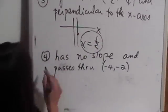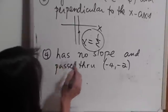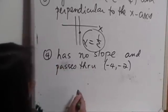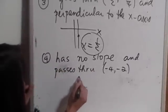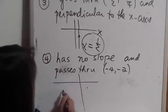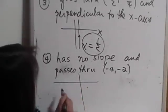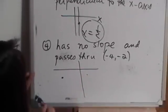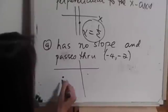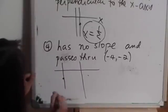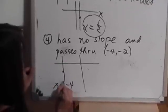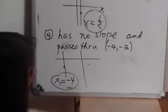Finally, I have a line that has no slope and passes through the point negative 4, negative 2. So negative 4, negative 2 is somewhere here, and I know that a line that has no slope is a vertical line, and this line will have equation x equals negative 4.